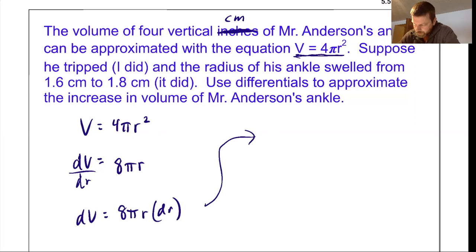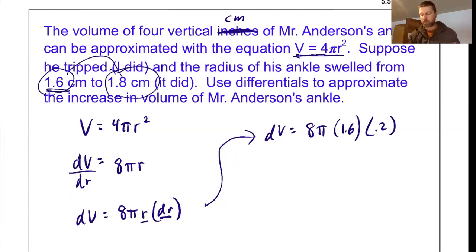Plug in the values I know. So change in volume dV would be 8π times the radius. Well, it started at 1.6 times the change in radius. Well, I went from 1.6 centimeters to 1.8 centimeters, which is a change of 0.2. So times 0.2. Again, one of the nice things about working with this is it really makes us start to think of dV as change in volume and dr as a change in radius, which they are, and that can be really useful for having a deeper understanding of calculus.